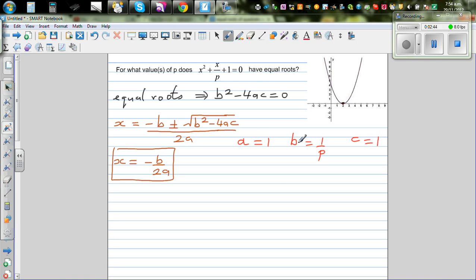So putting this in this equation, I can say 1 over p the whole squared minus 4 times 1 times 1 is equal to 0. So I can say 1 over p squared minus 4 is equal to 0.